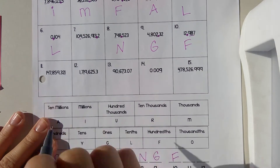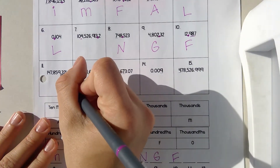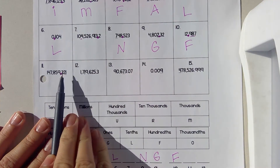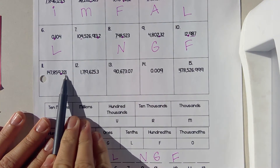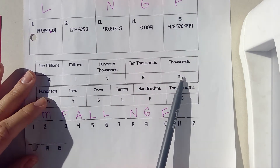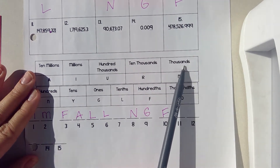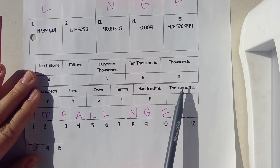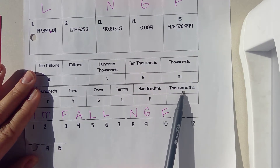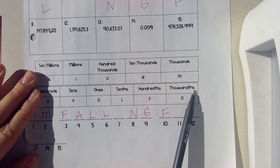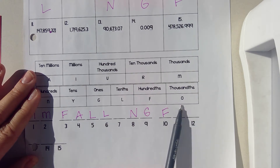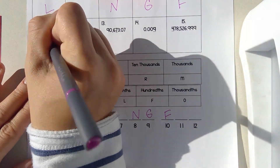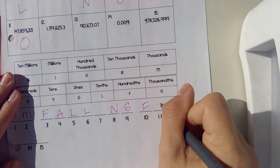Number eleven — this is a decimal. So that would be tenths, hundredths, thousandths. If you said thousands, that would be incorrect because that's a whole thousand. I want thousandths for my decimal place value, which is an O. So number eleven is O.